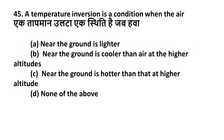Question 45: A temperature inversion is a condition when the air — Option A: Near the ground is lighter, Option B: Near the ground is cooler than air at higher altitudes, Option C: Near the ground is hotter than at higher altitudes, Option D: None of the above. The right answer is Option B — near the ground is cooler than air at higher altitudes. Please remember this answer.